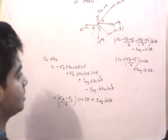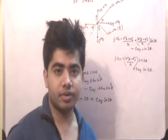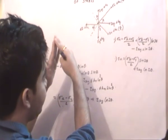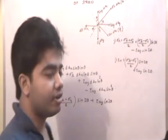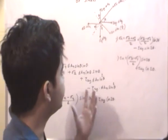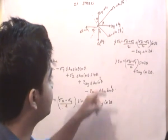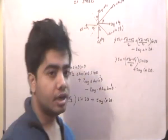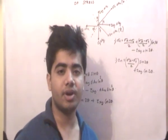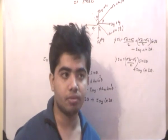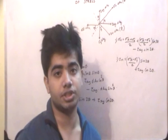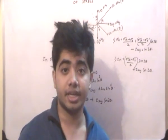So a brief synopsis: we have the plane state of stress, and we consider a plane at an angle of theta with respect to the reference plane. On that plane, the values of normal stress and shear stress — sigma n and tau n — are obtained by this derivation. In the next lecture, what we will try to understand is when we have the maximum and minimum values of normal stress, the maximum value of shear stress, and the planes at which they occur. Thanks a lot for listening.